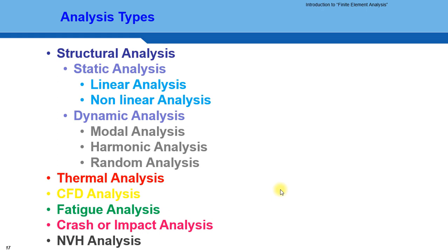The different types of analysis that can be performed using FEA include structural analysis, thermal, CFD, fatigue, crash, and impact analysis. There is no type of analysis that cannot be performed using FEA. These types are particularly common in mechanical engineering, but are not confined there — even in electronics, CFD and thermal analysis are needed for heated circuitry, and in electrical engineering structural analysis is needed for motor housing design.